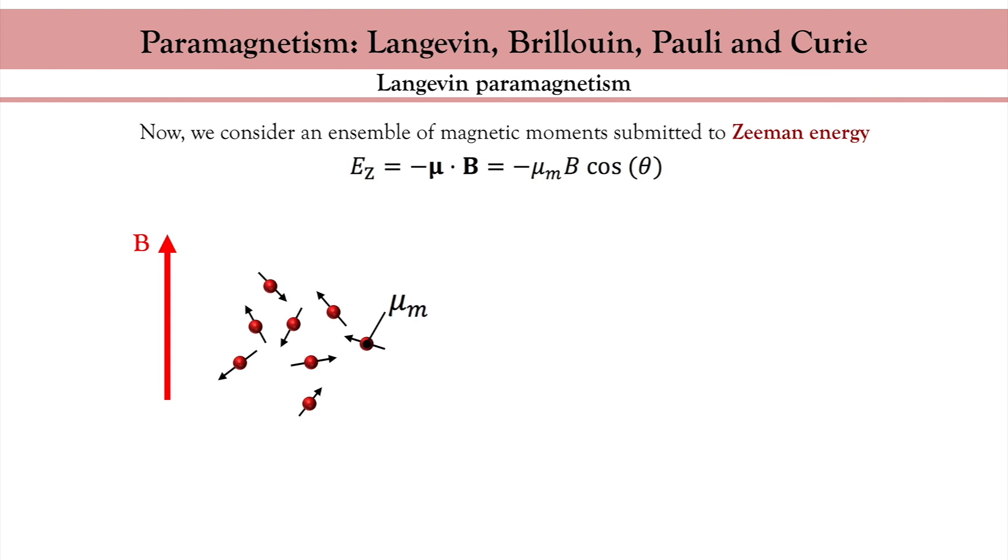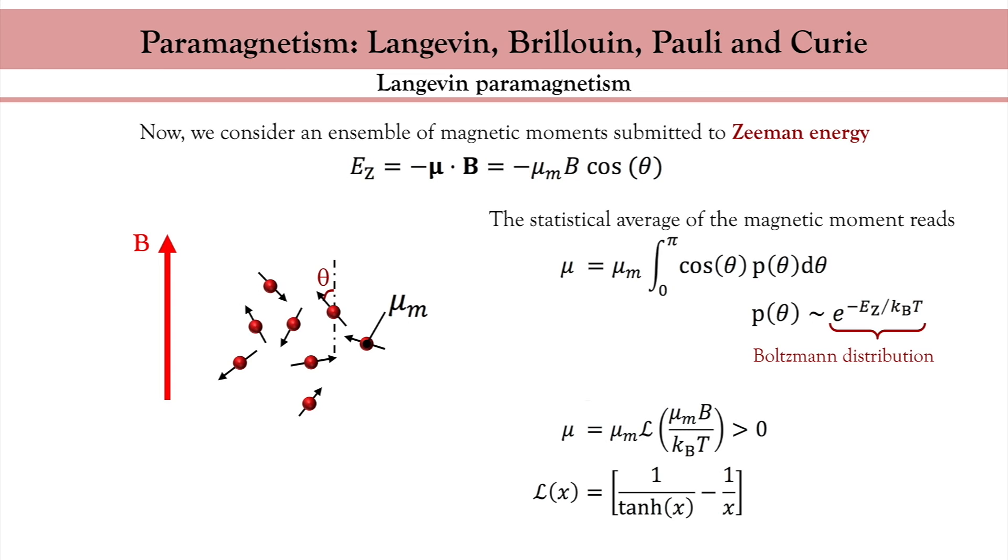The diamagnetism discussed previously is based on the Lorentz force and only considers the orbital response of the electron. It completely disregards the spin response. Let us now consider the fact that electrons carry a magnetic moment. Classically, if we apply a magnetic field, each magnetic moment will experience the Zeeman interaction. In other words, their energy depends on the angle theta between the magnetic moment and the magnetic field. Then I can take the statistical average, assuming a classical Boltzmann distribution. This simple integral was performed by Langevin, who obtained a positive magnetic moment, with a complex temperature dependence given by the so-called Langevin function. Since the magnetic moment is positive, meaning along the magnetic field, it is called paramagnetism.